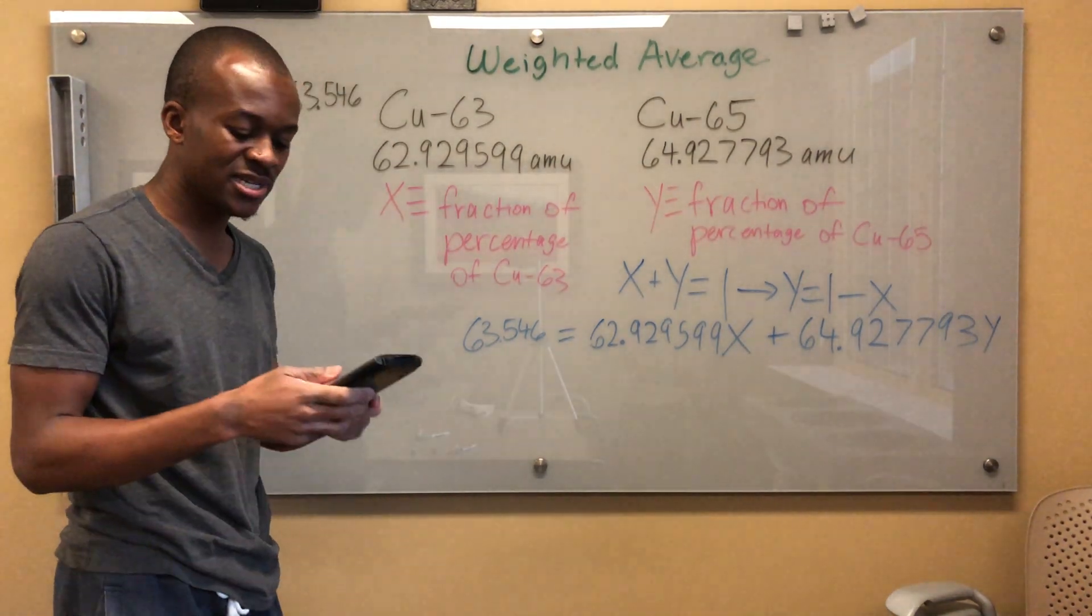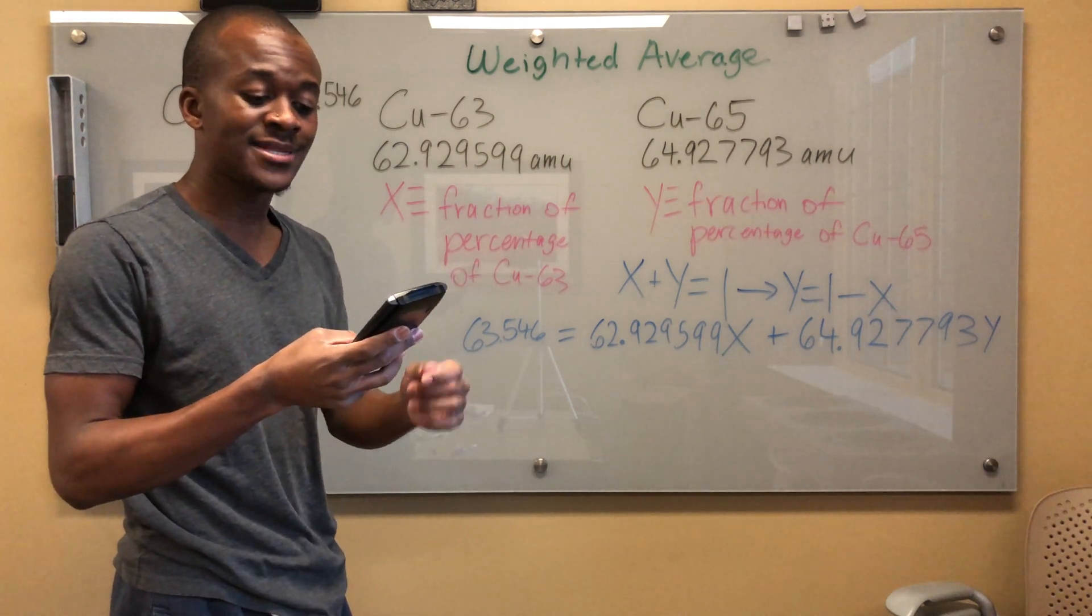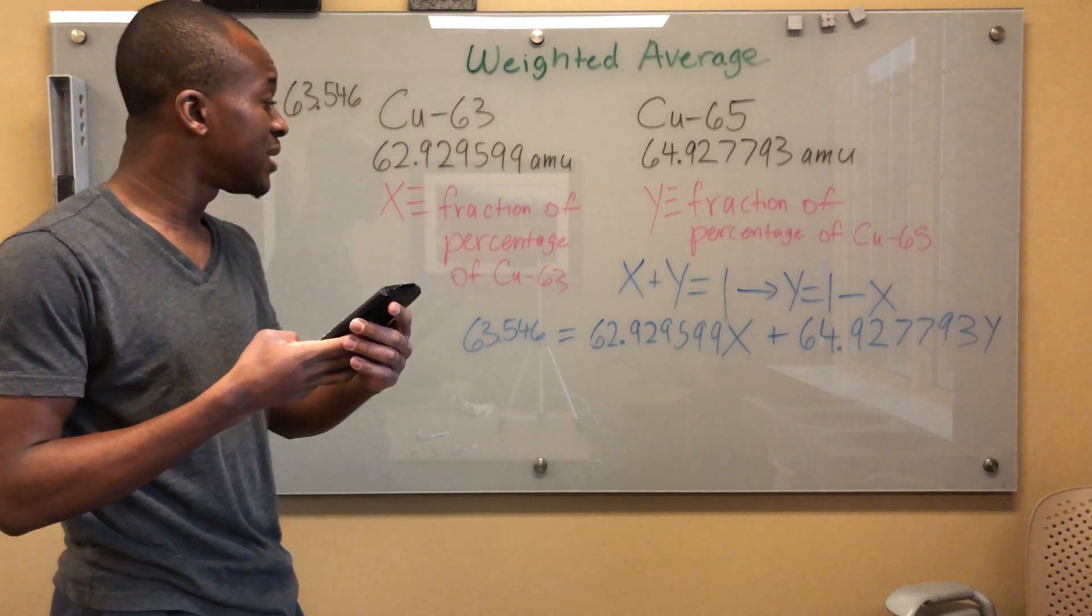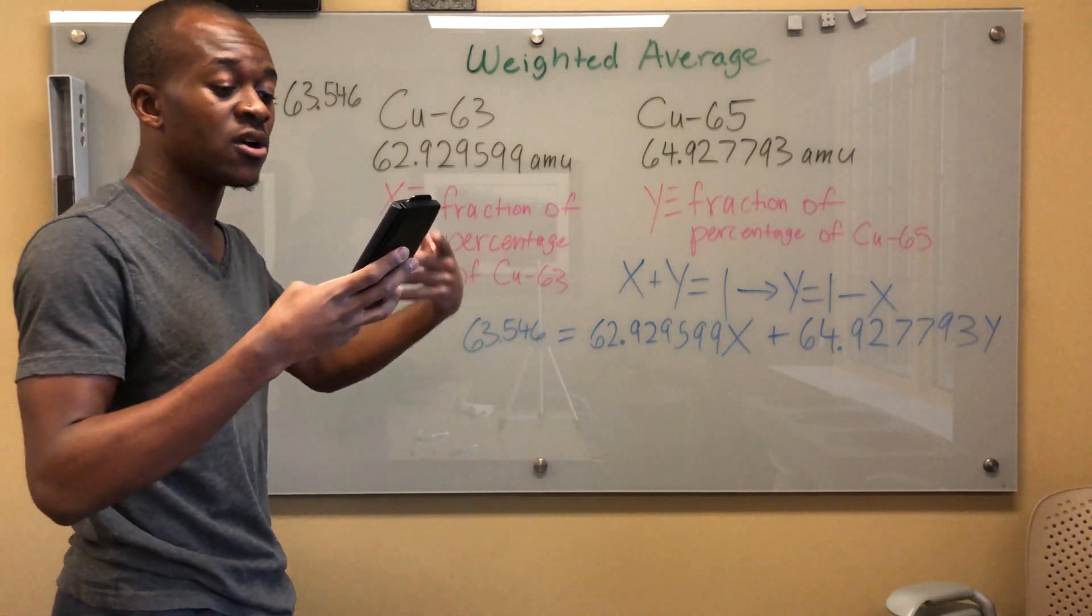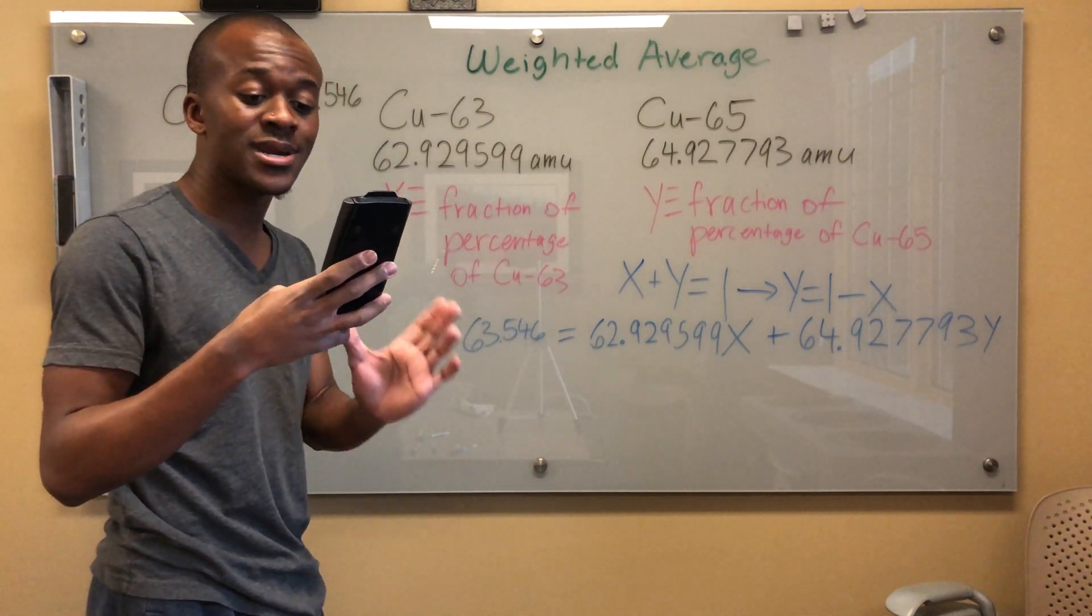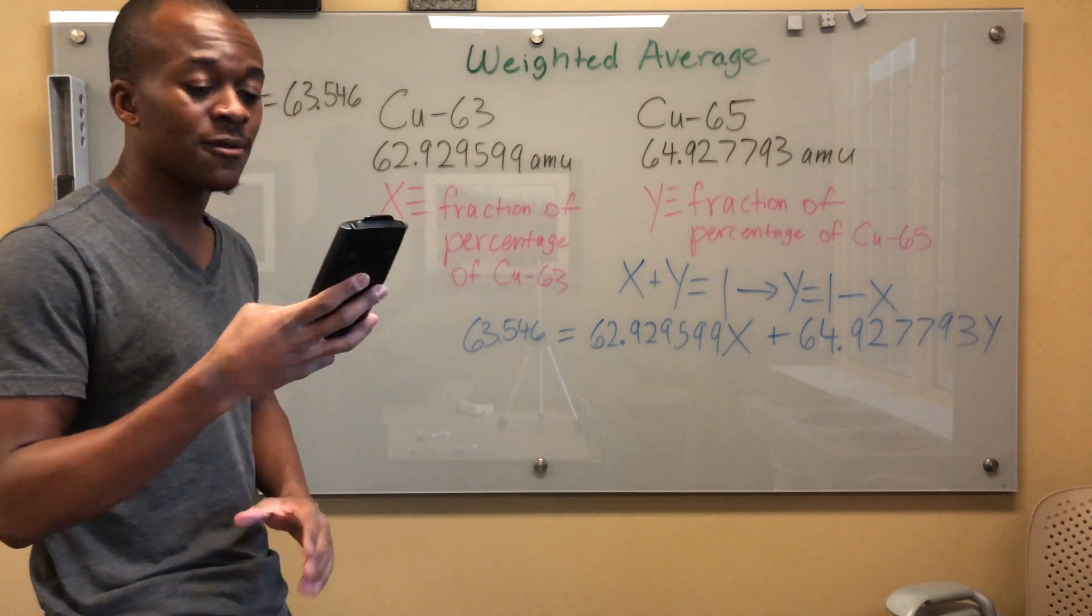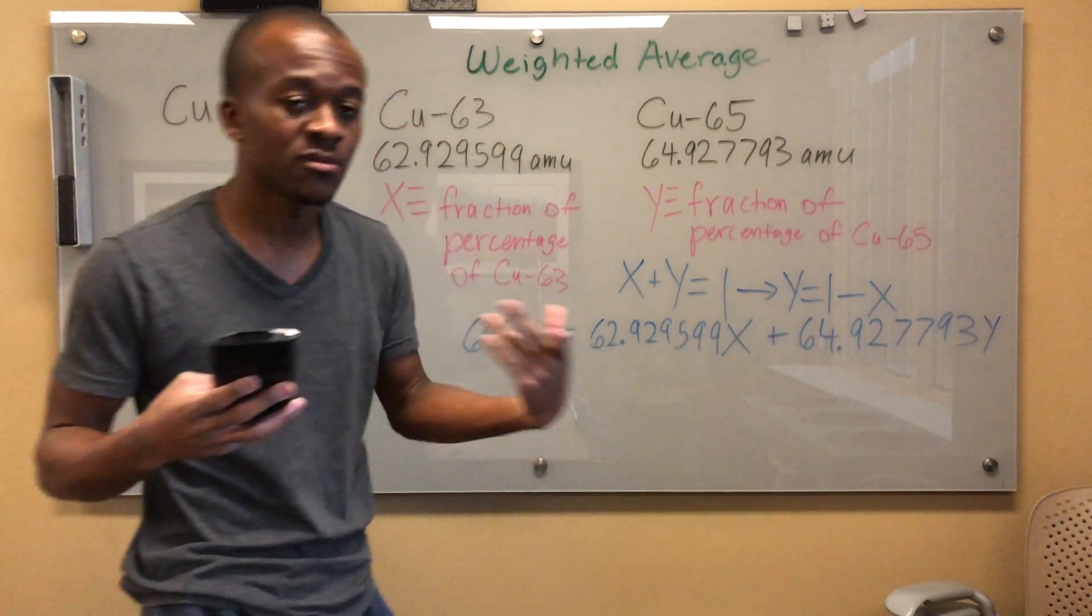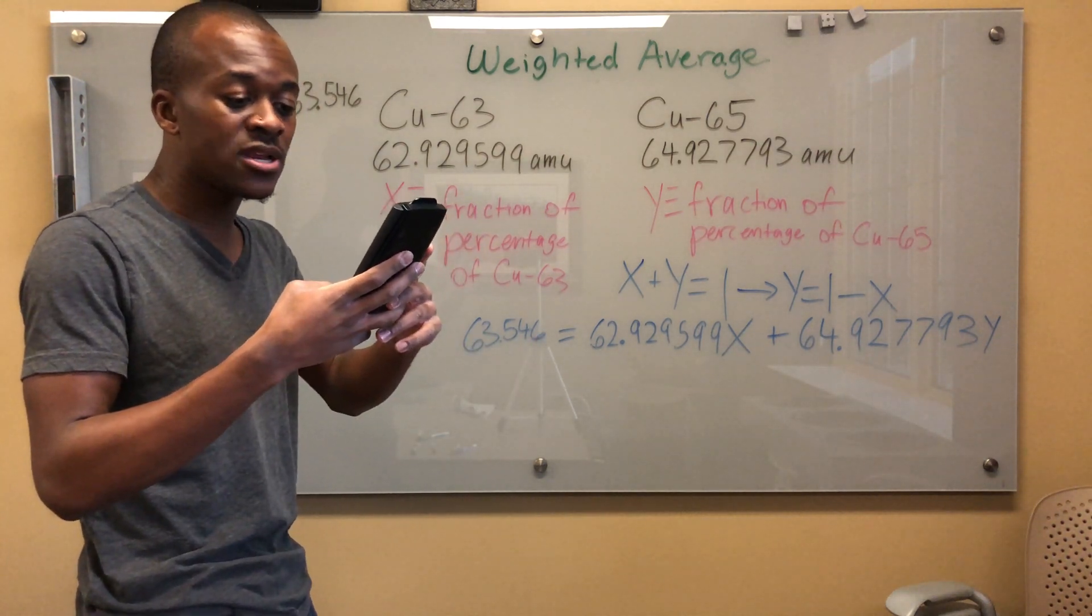But I'm not going to do that because that's going to take too much time. But if I go to System Solver on my TI-36X Pro, I can put in these values. So 1X plus 1Y is equal to 1, right? 62.93X plus 64.93Y is equal to 63.55. And you can go ahead and put these values in exactly if you want to, which is actually what I did and they rounded it.